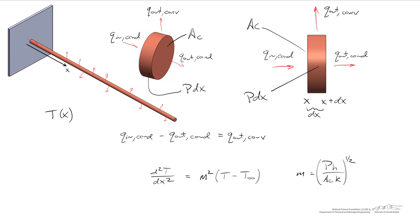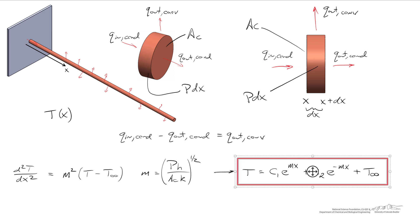This is a second-order differential equation with respect to x, so we'll need two boundary conditions to solve it. The general solution looks like T(x) = c1·e^(mx) + c2·e^(-mx), where c1 and c2 are constants of integration. To find those constants, we apply two boundary conditions. For example, one common boundary condition specifies the temperature at the base: T equals T_base at x equals zero.